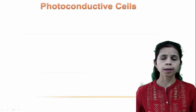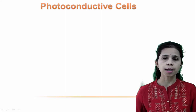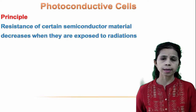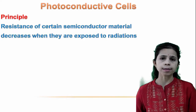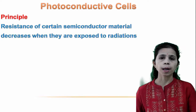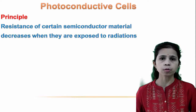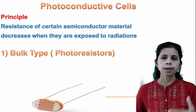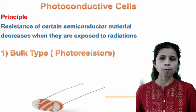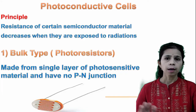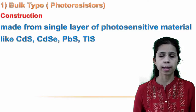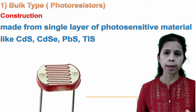Photoconductive cells are based on the principle that the resistance of certain semiconducting materials decreases when exposed to radiation, meaning conductance and current increase when light falls on the material. Bulk type photoconductive cells, also known as photoresistors or light dependent resistors (LDRs), are made from a single layer of photosensitive material with no PN junction. They are made from materials like cadmium sulfide, cadmium selenide, thallium sulfide.